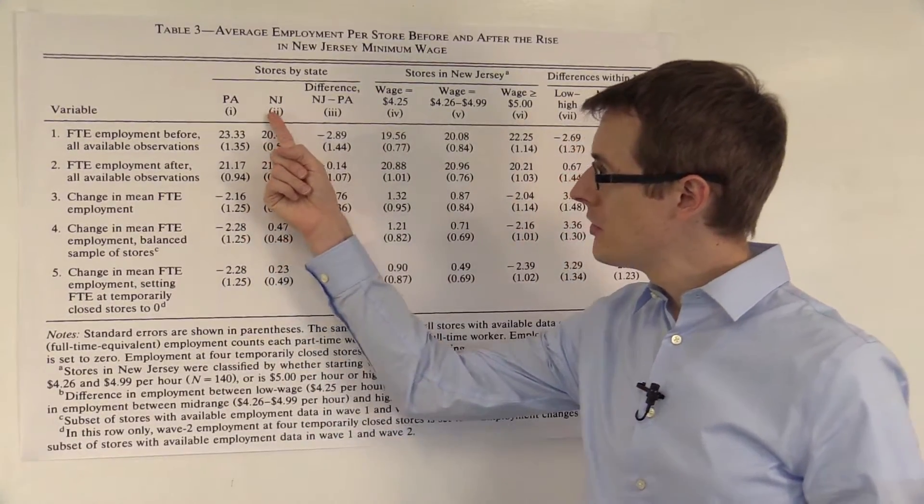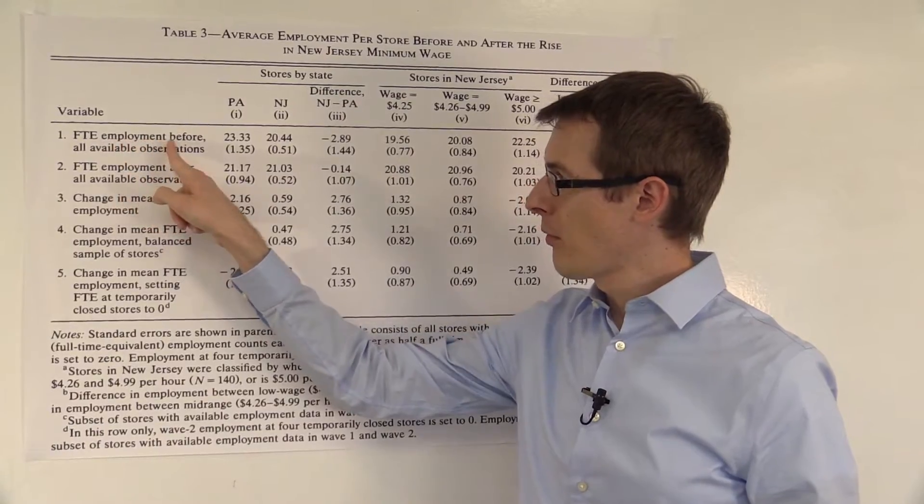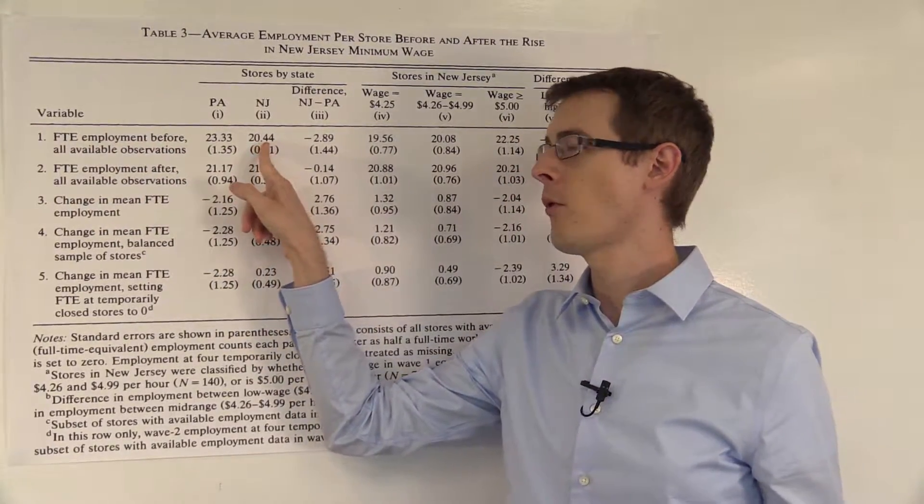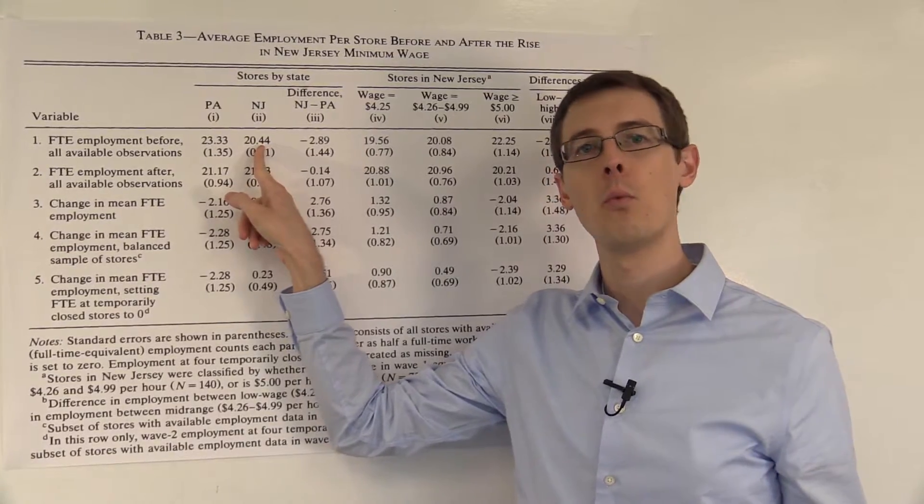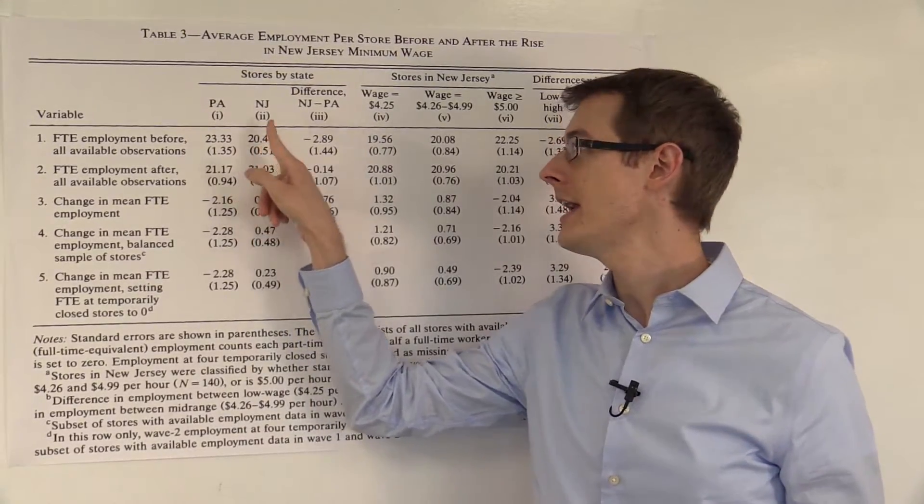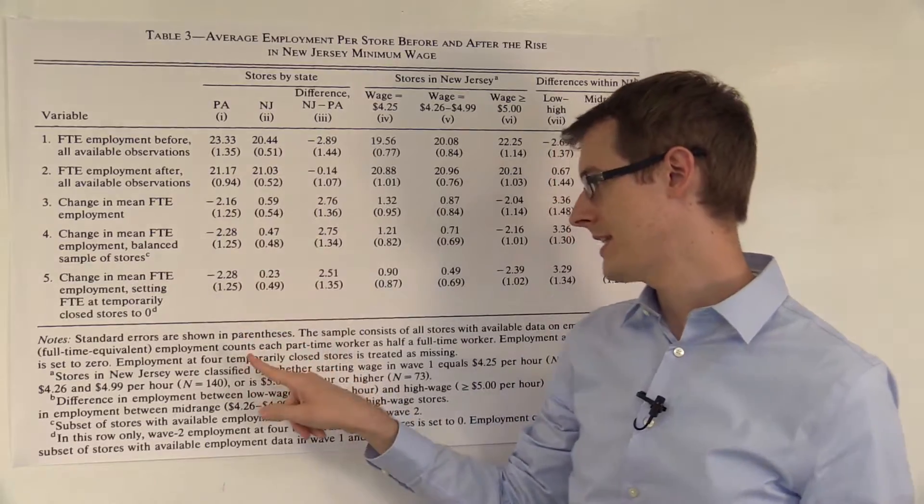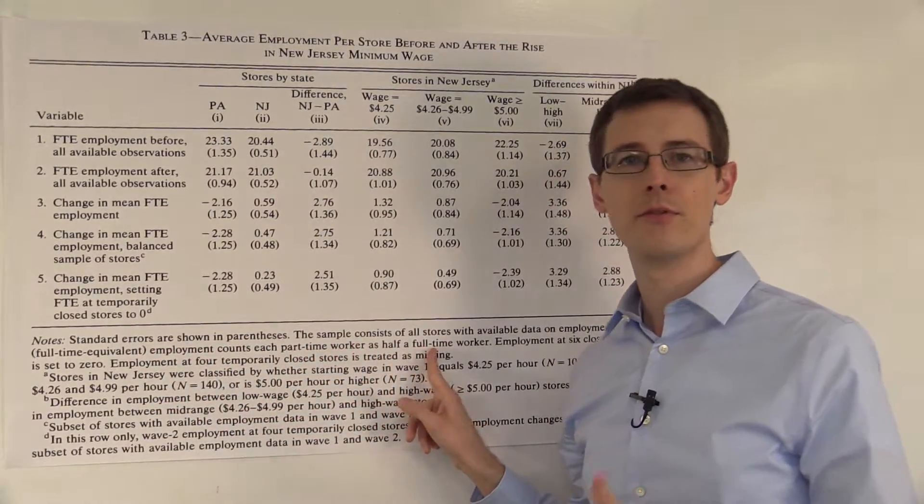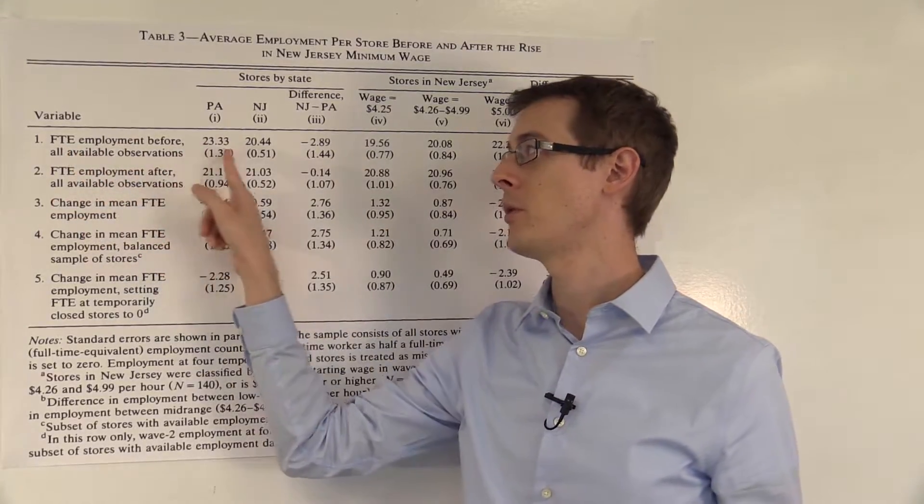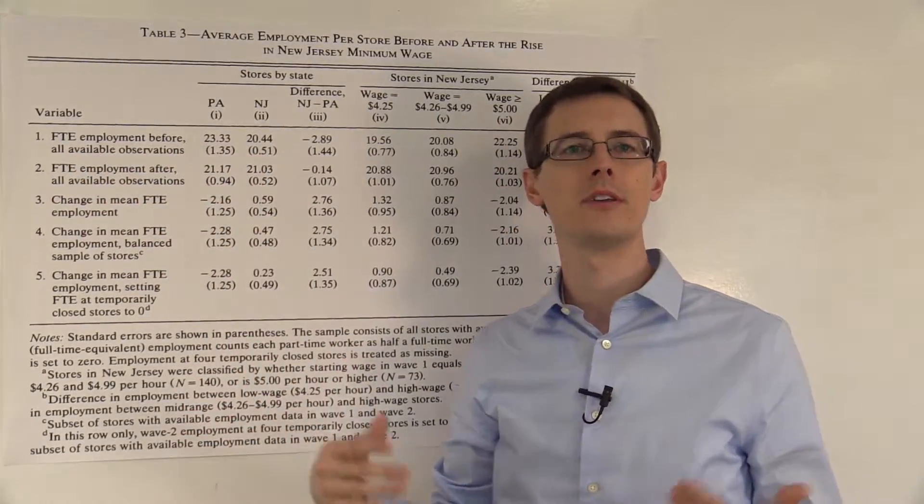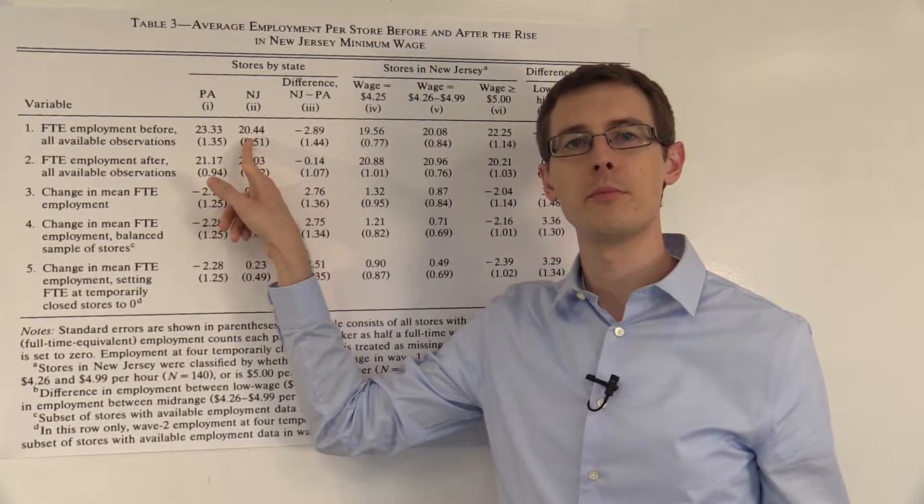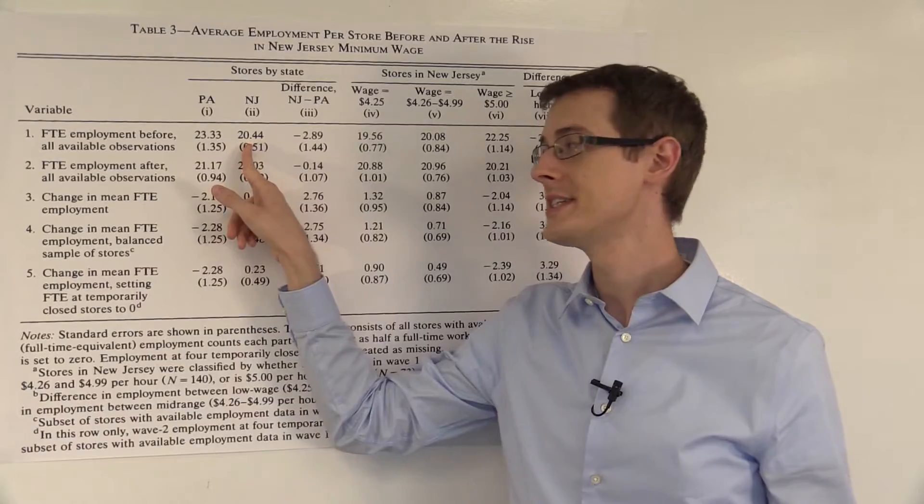So here's New Jersey. Full-time employment before, all available observations: 20.44 people on average worked in a fast food restaurant in New Jersey. So here they say each part-time worker counts as half of a full-time worker. So that's what a full-time equivalent means. We're counting part-time people as half of a full-time worker. So about 20.5 people worked there before the minimum wage was increased.